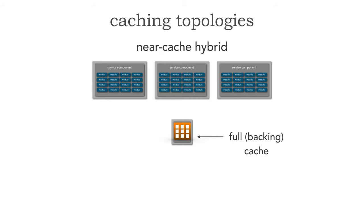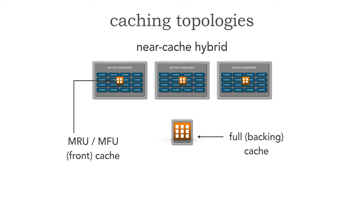With the near-cache hybrid, we do have a distributed cache, and this is called a full or a backing cache. Then what we have is something called a front cache, which is actually within each service or maybe a user interface. This is typically a smaller version — a subset of the full backing cache, generally an MRU or MFU, most recently used or most frequently used cache. There is a client library, such as Apache Ignite, that sits within each service component and communicates with the full backing cache to synchronize data between the full cache and our front cache.